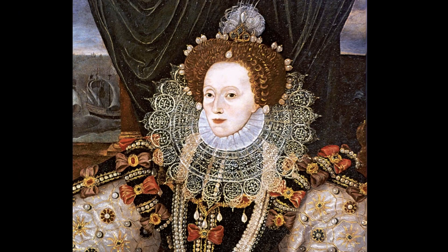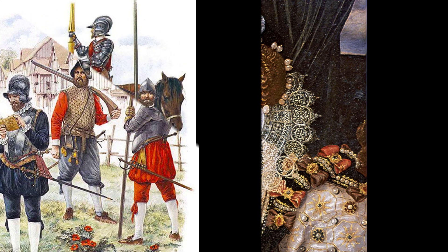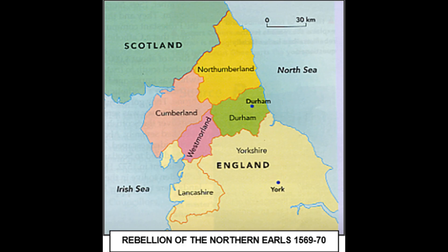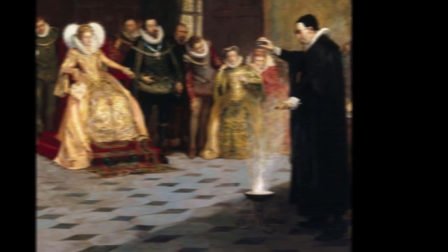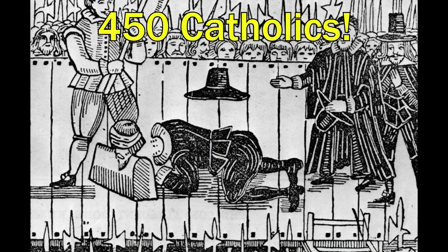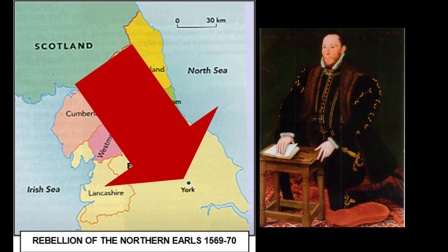Elizabeth then raised an army of several thousand with the help of the Earl of Sussex and marched against the rebels. Hearing of this army, the rebel forces broke down and fled, bringing the rebellion to a close. As retribution, Elizabeth executed 450 Catholic rebels along with the Duke of Northumberland at York in 1572.